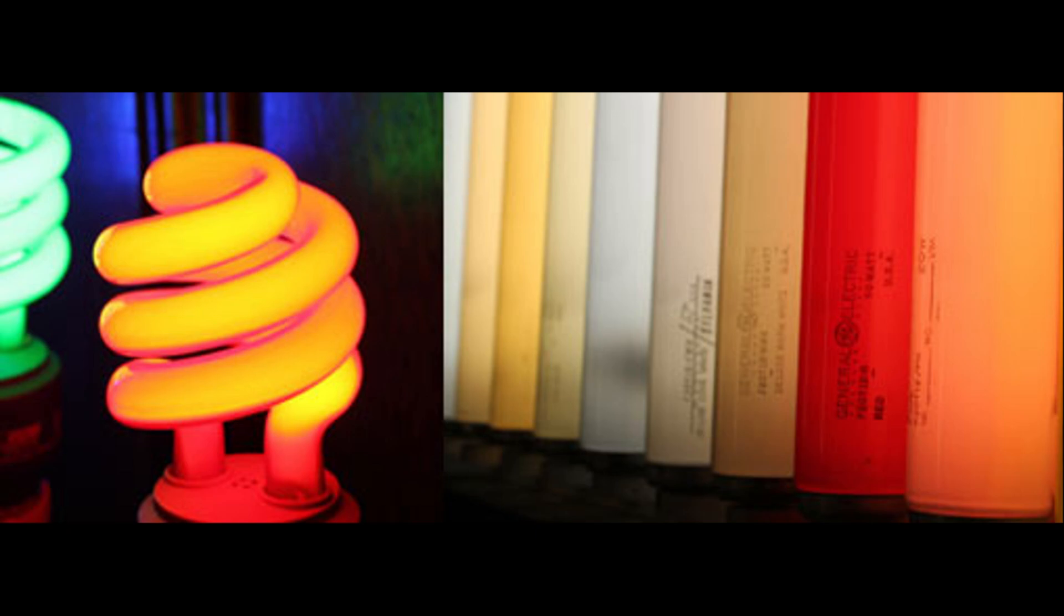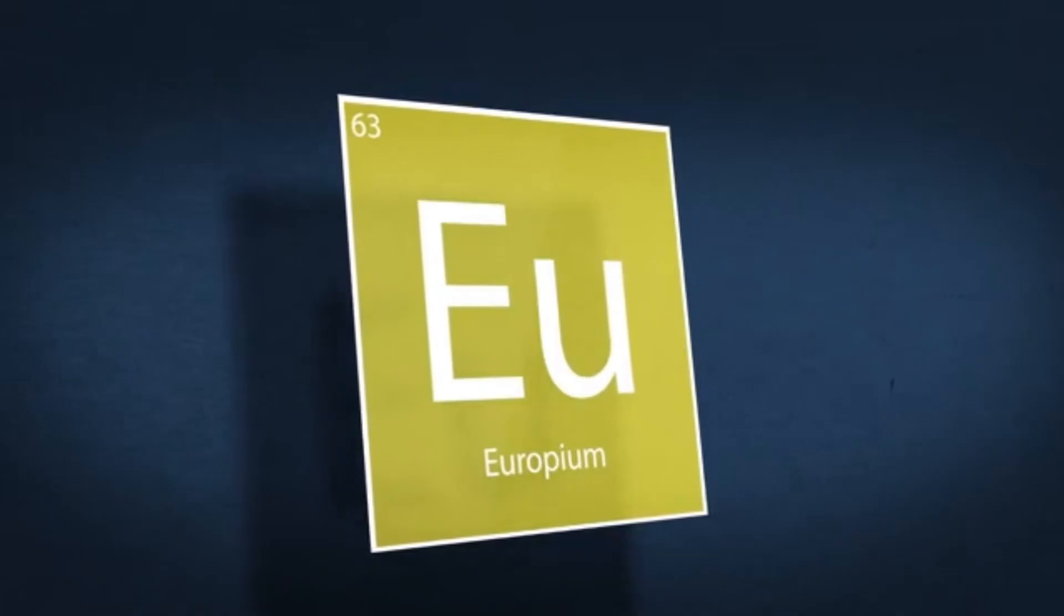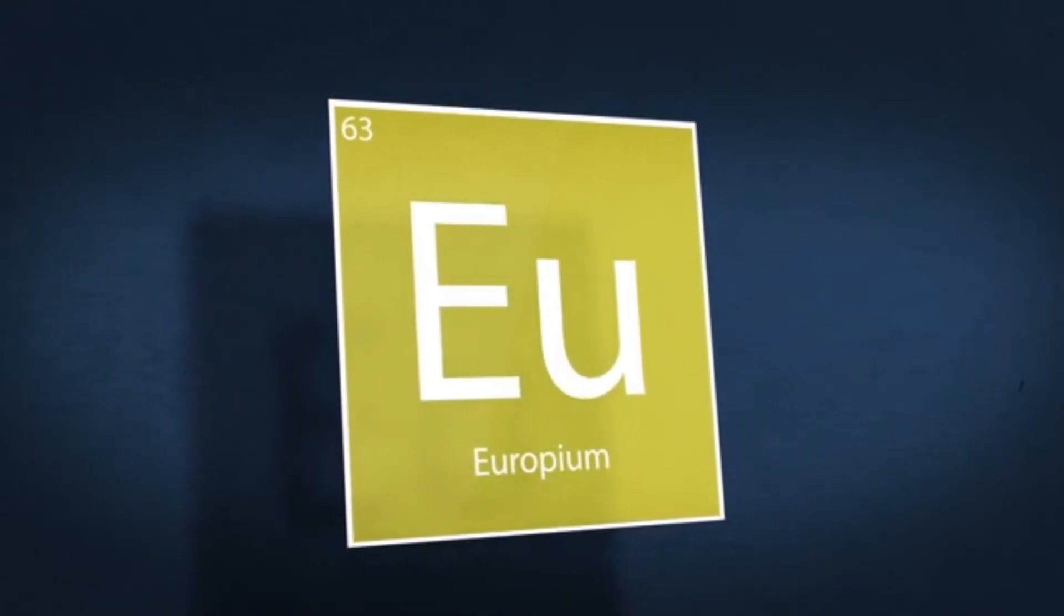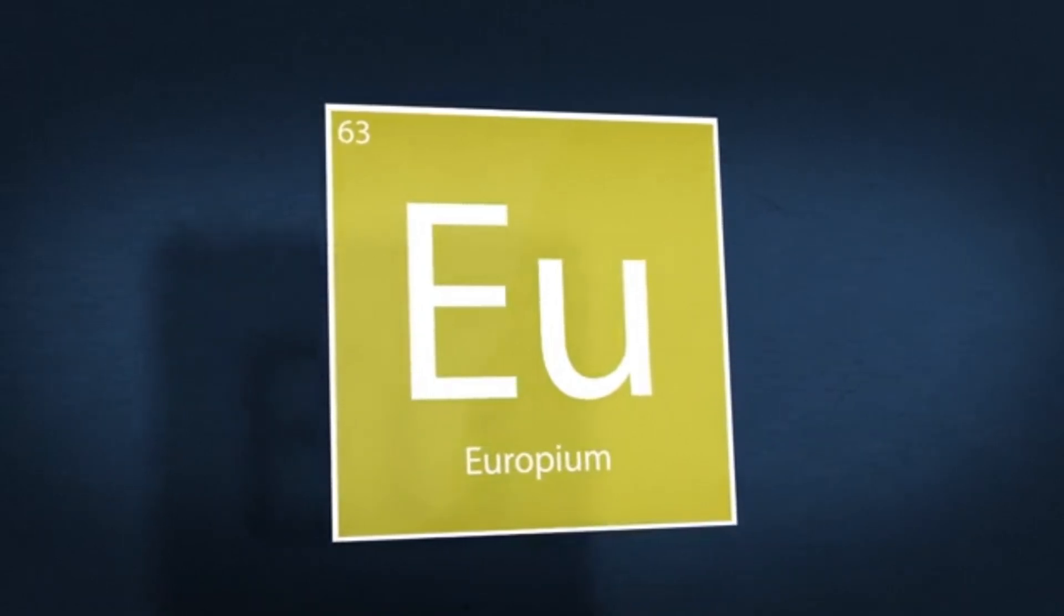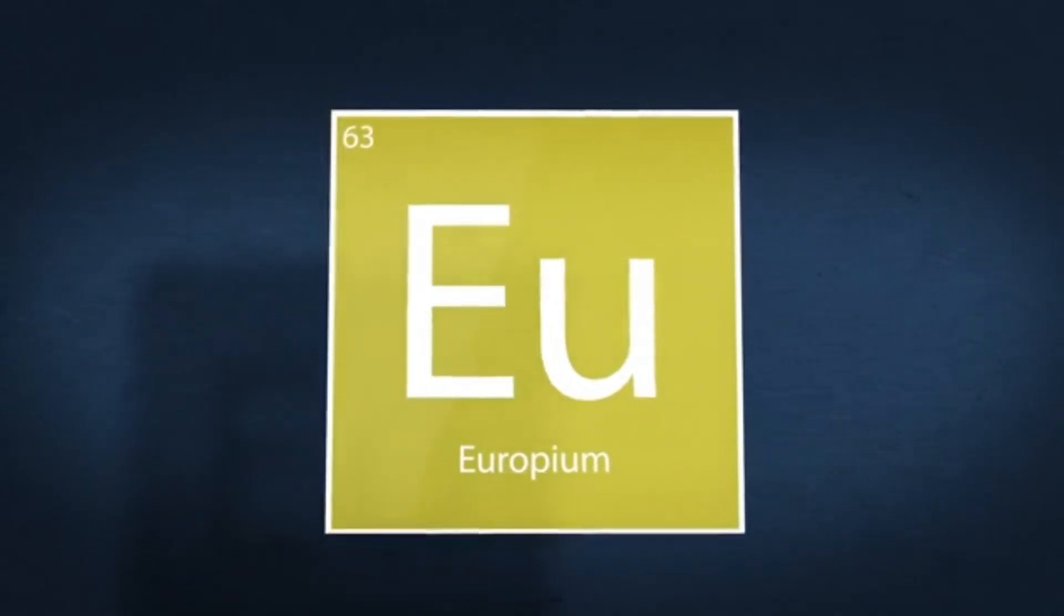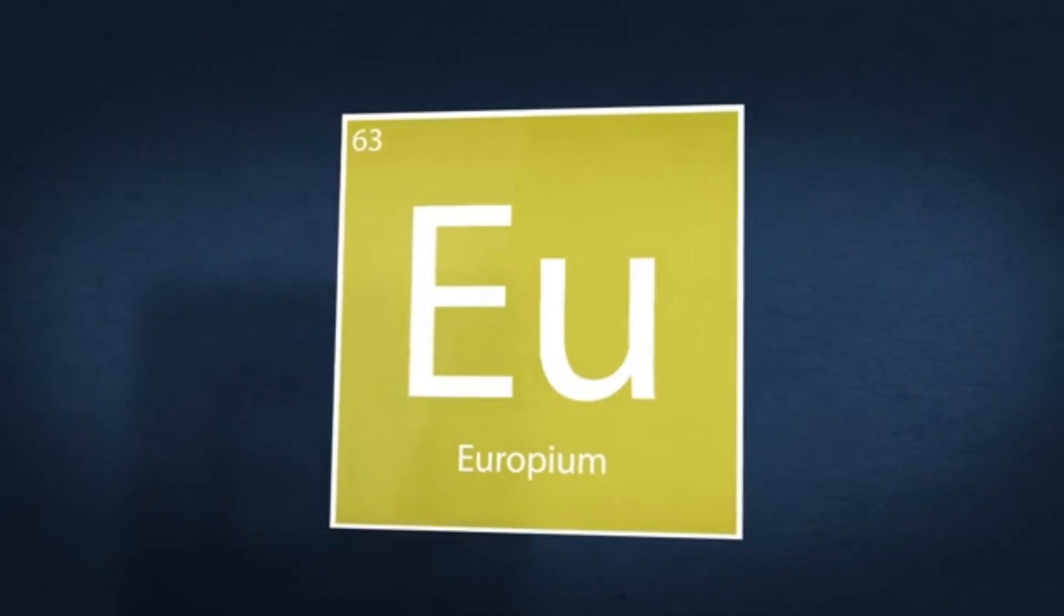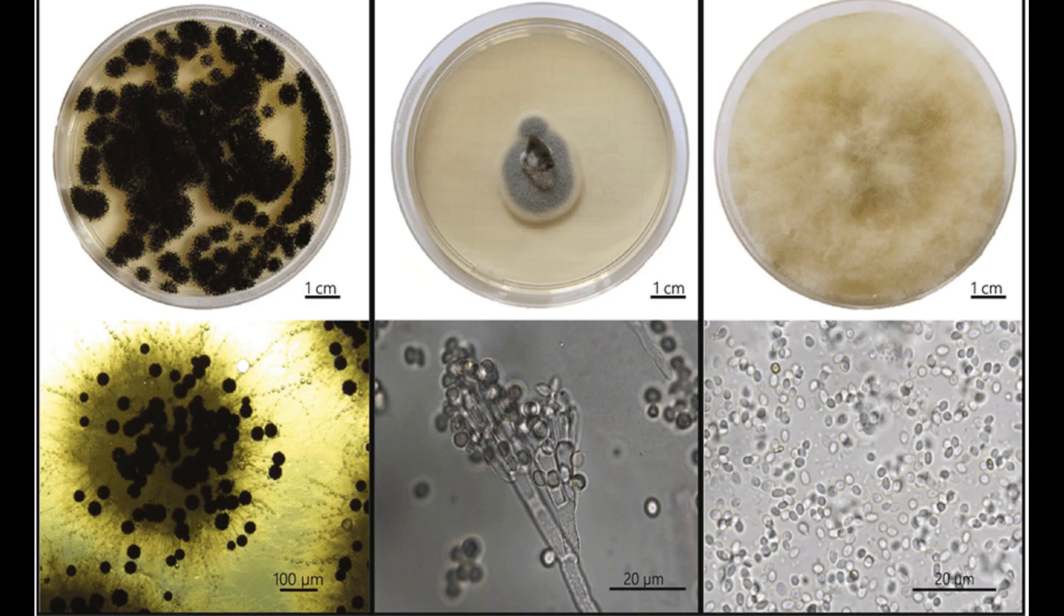Fifth, spent catalysts and fluorescent lamps. Spent catalysts from oil refining and used phosphors from fluorescent lamps also contain europium, terbium, and yttrium. Fungal biosorption shows remarkable potential in capturing these metals, even from dilute solutions.